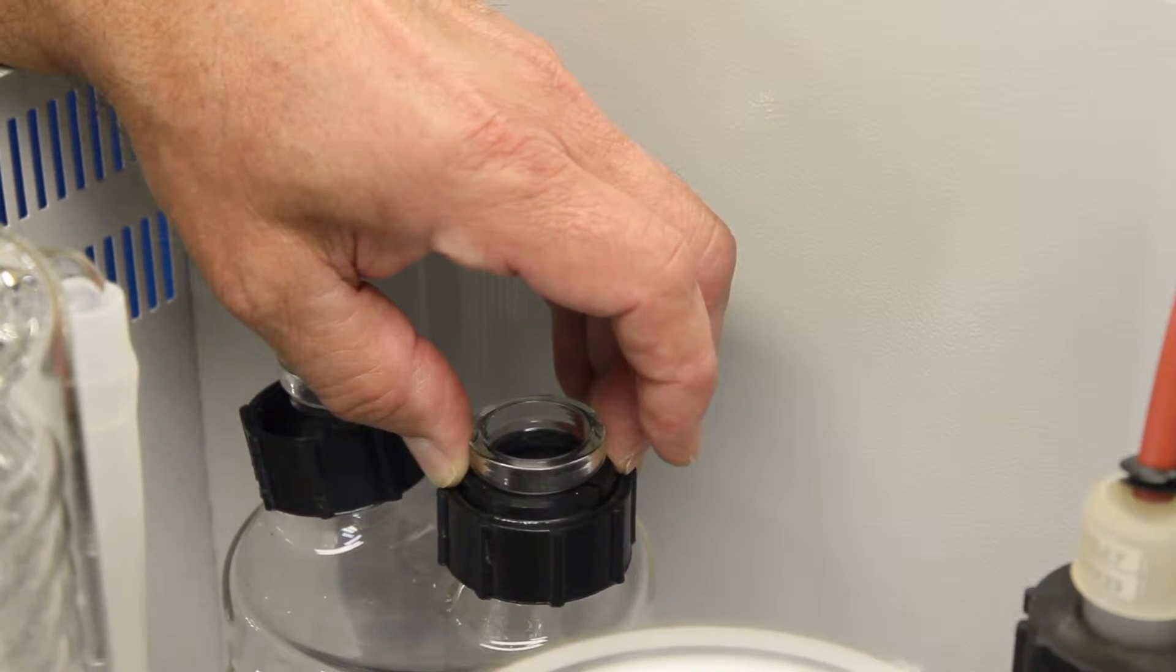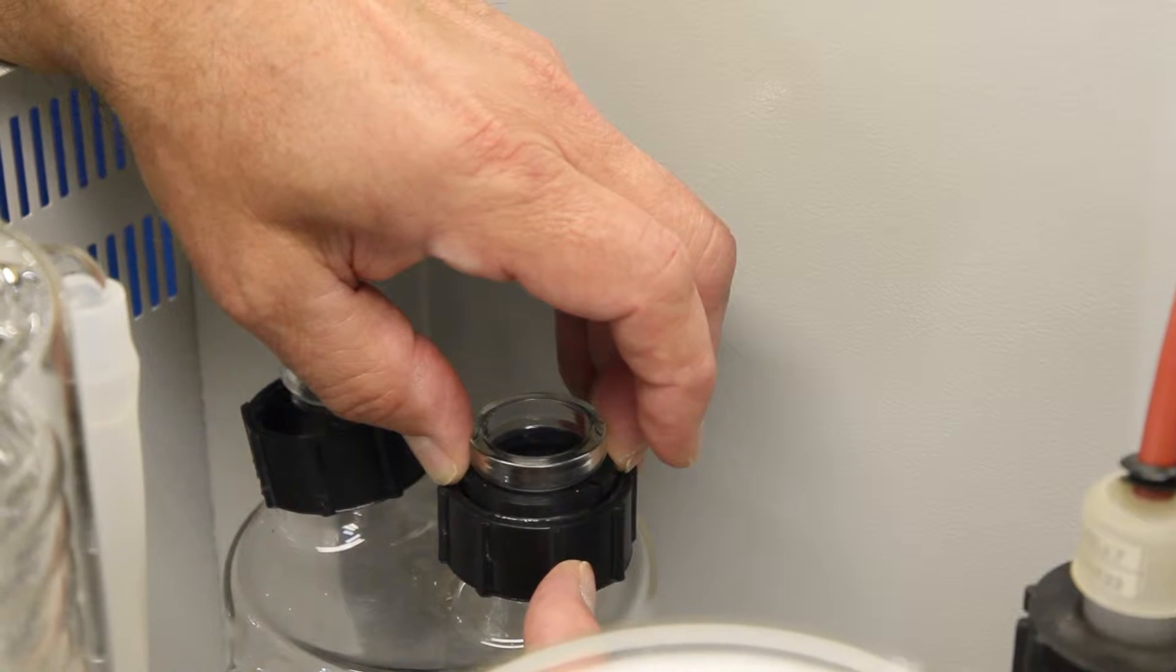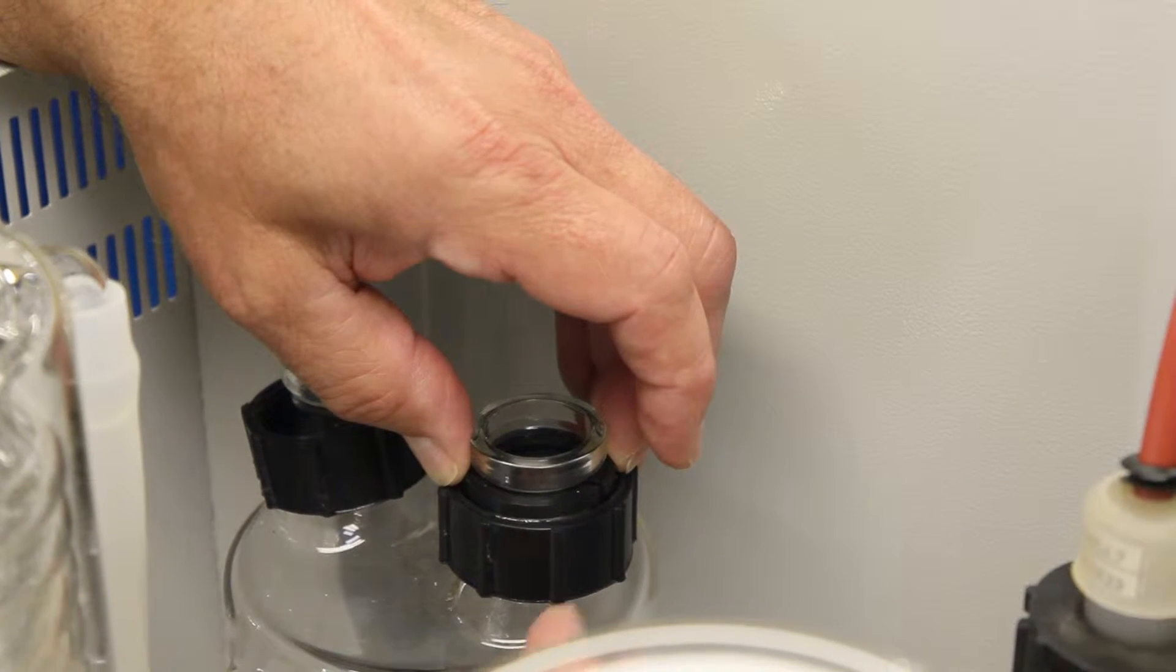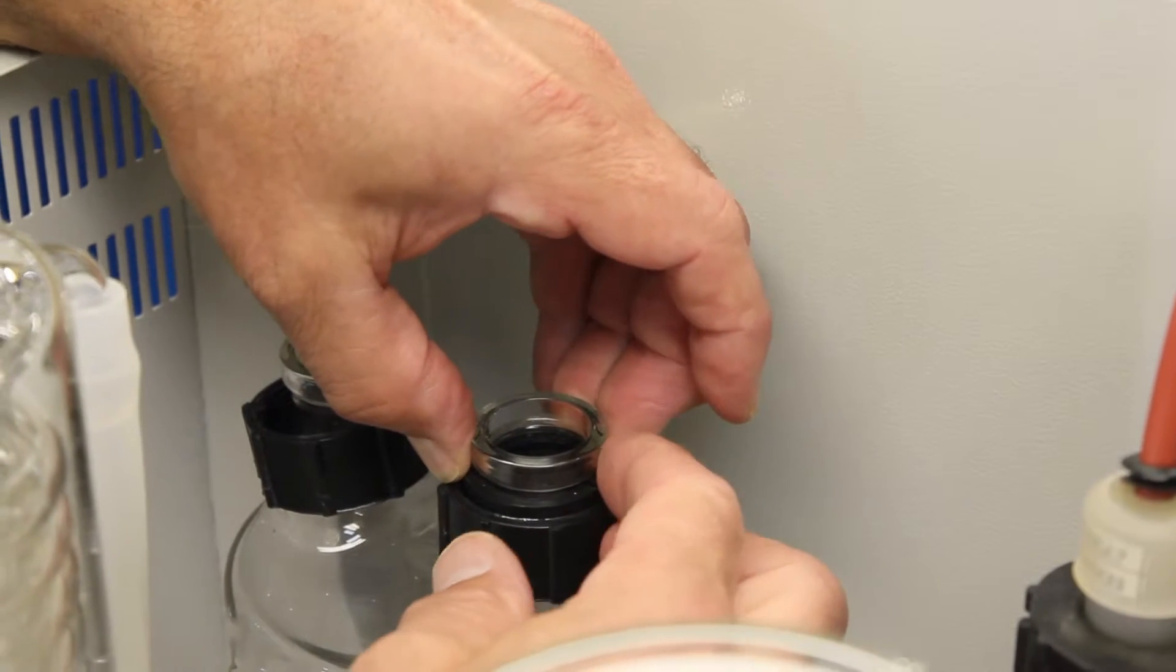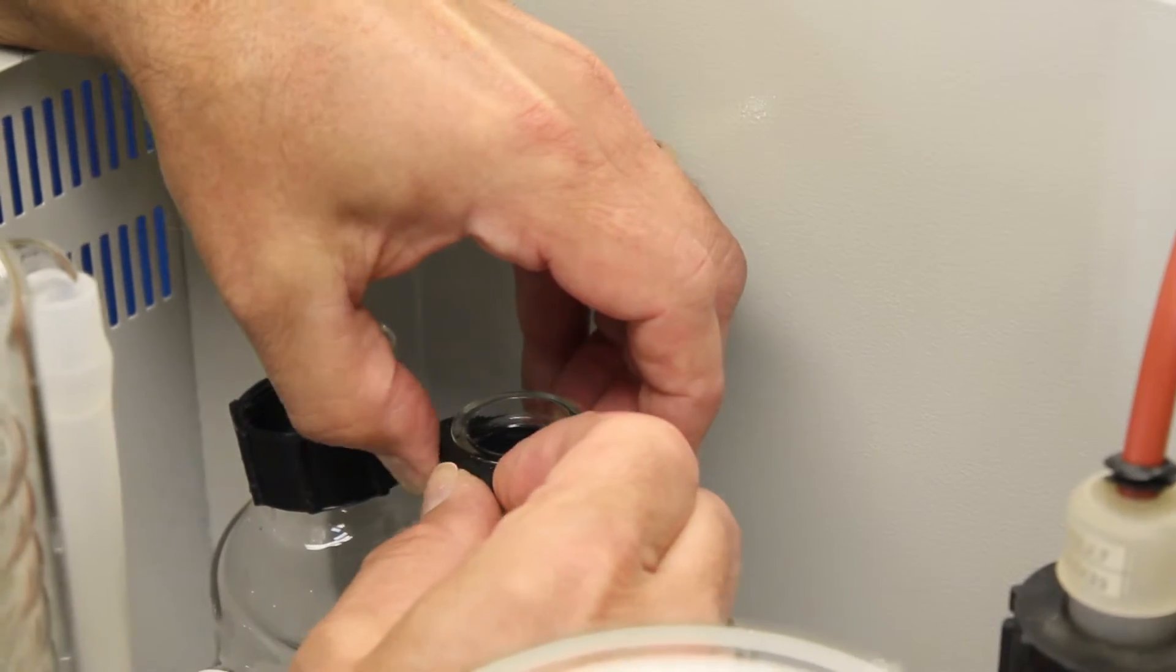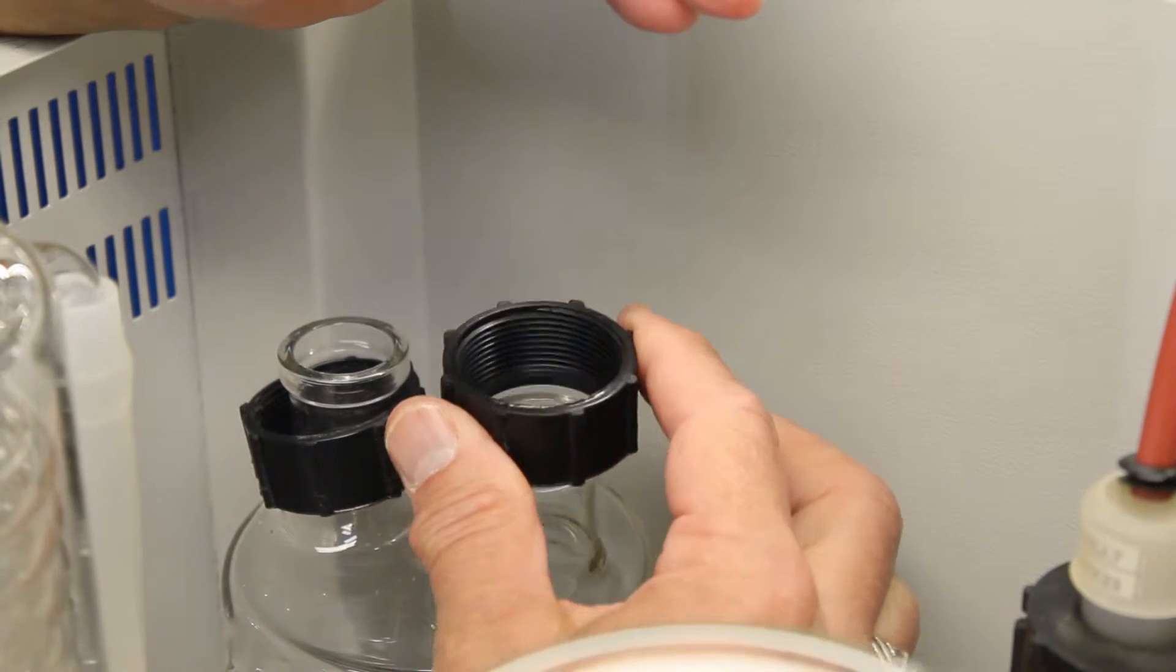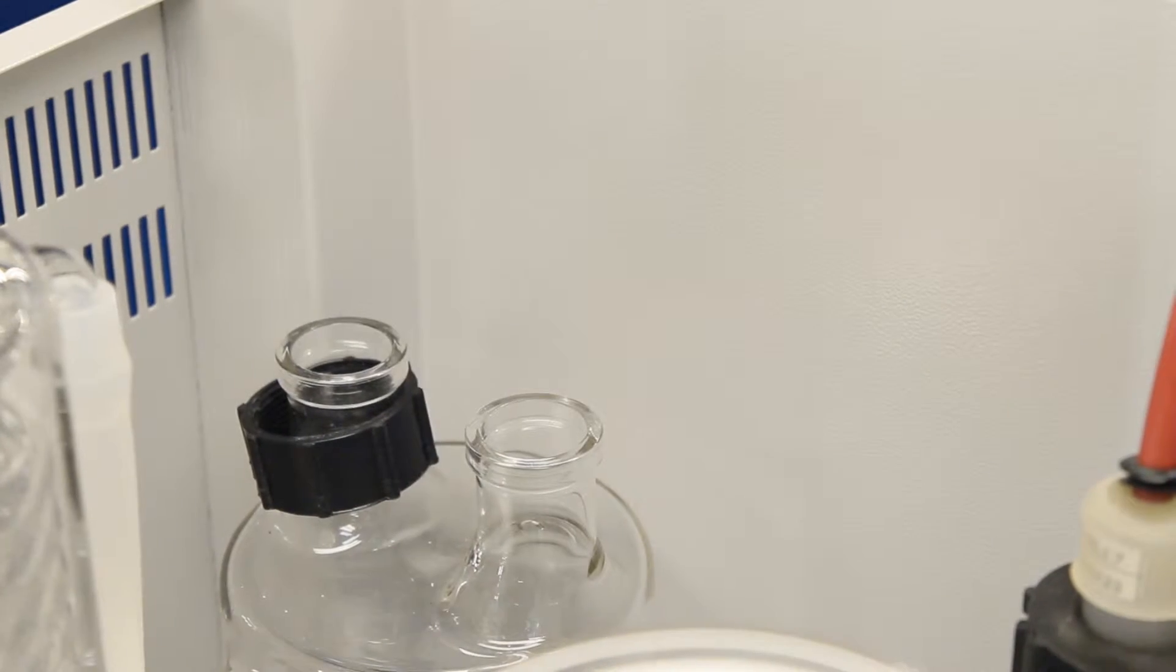Now that you have the element removed, you're going to need to remove the split ring and the bottom half of the plastic union because your new boiler will not have that with the boiler, so you need to take it off the old boiler. Take your split ring, find where it's split apart, and you need to pull those apart. Then pull the plastic union up and you'll do the same thing for the other side.